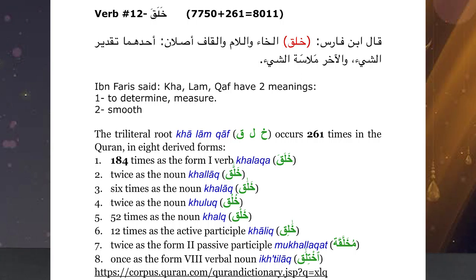The other form of pretty good significance is khalqun. Khalqun appears 52 times — Allahu Azzawajal mentions khalqun. Khalqun is the noun form talking about creation itself — whatever it is that was created, that is creation, khalq.